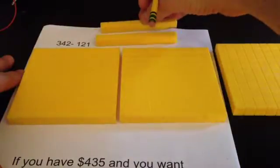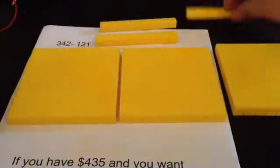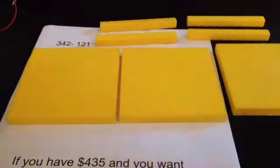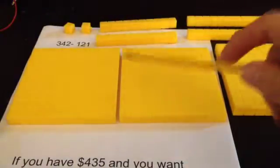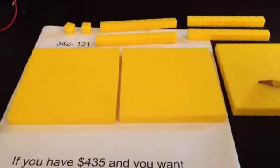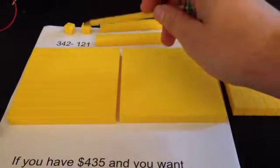Now 42. We already have these two tens up here. 10, 20, 30, 40. And 1, 2. They're all spread out, but I've got 100, 200, 300, 10, 20, 30, 40. That's 340, 341, 342.